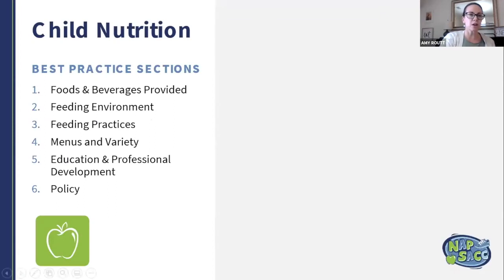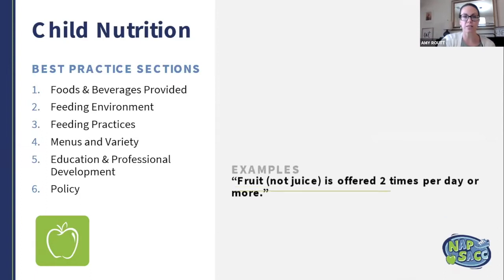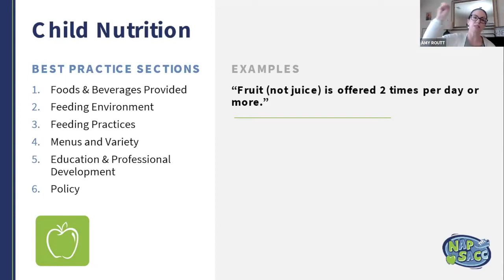For example, the child nutrition module has best practice sections including foods and beverages provided, feeding environment, feeding practices, menus and variety, education and professional development, and policy. An example question from the foods and beverages section would be: 'Fruit, not juice, is offered two times per day or more.' You answer that question, and based on your answers, Go Knapsack shows you whether you're meeting best practices or not.